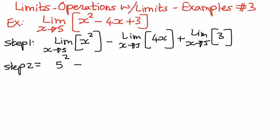Minus, in the second one, we have a constant number multiplied to the variable x. So we're going to pull out the constant term outside and substitute the value of x as equal to 5. Plus, in the third one, the constant of a limit is the constant number itself, so therefore the limit of the constant number 3 as x approaches 5 is still going to be equal to 3.